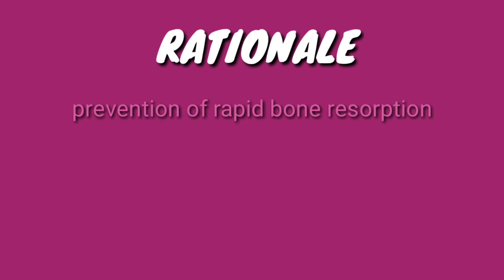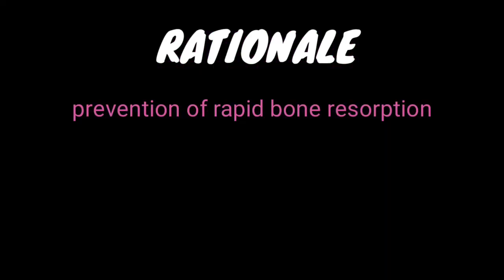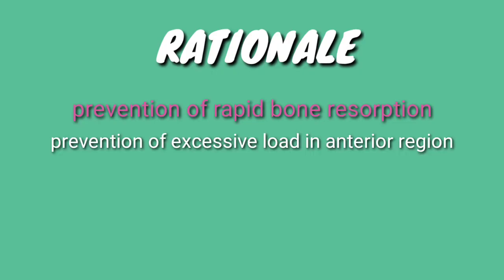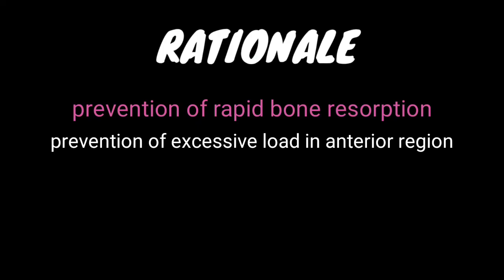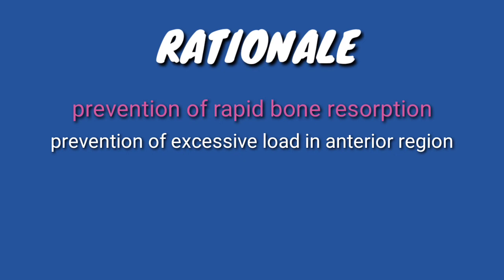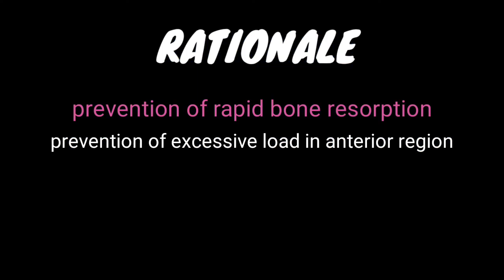Moving on to the rationale, we have to prevent rapid resorption of bone. This can be done by increasing the stability of the denture through extension up to the retromolar pad. To prevent excessive load in the anterior region, you can provide stable occlusion. The posterior occlusion should be free of interfering contacts during both centric and eccentric movements, with minimal contact in anterior teeth even during protrusive movement. Anterior teeth are used only for phonetics and aesthetics, and patient education is most important.